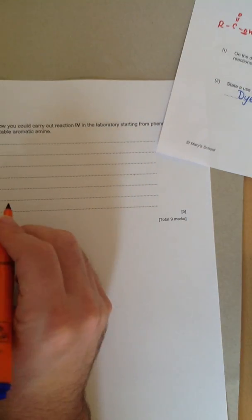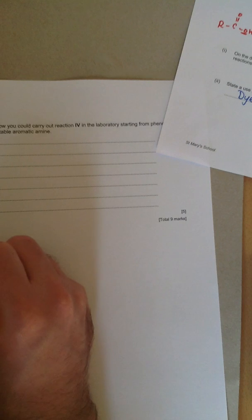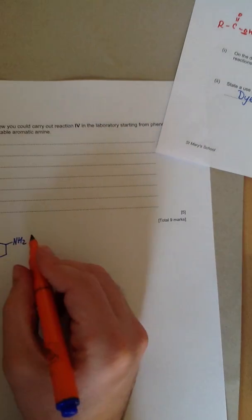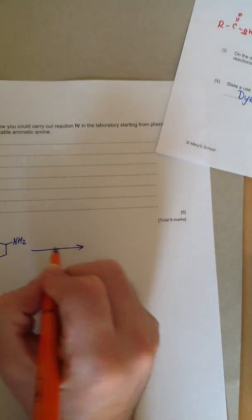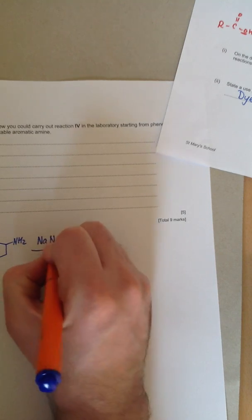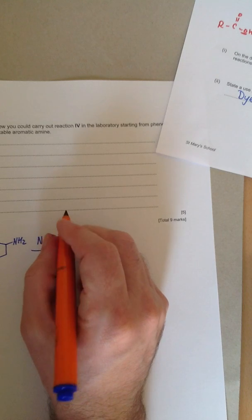This is the reaction scheme that you need to know. To make a diazo compound, the first thing you need to do is start from a suitable amine. This is phenylamine, and you may have even done this practically. You react it with sodium nitrite, NaNO2, not nitrate, NO3.